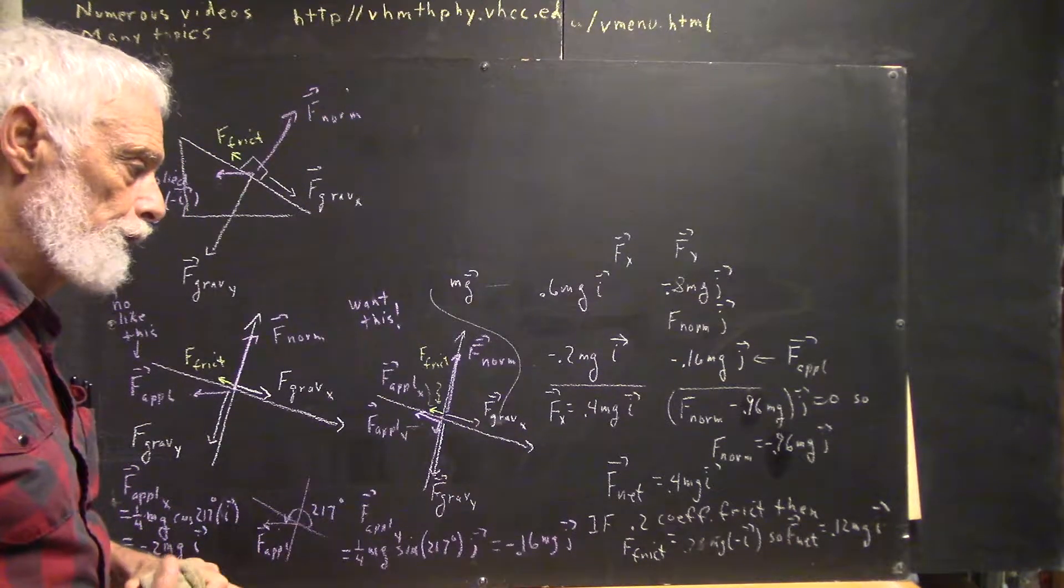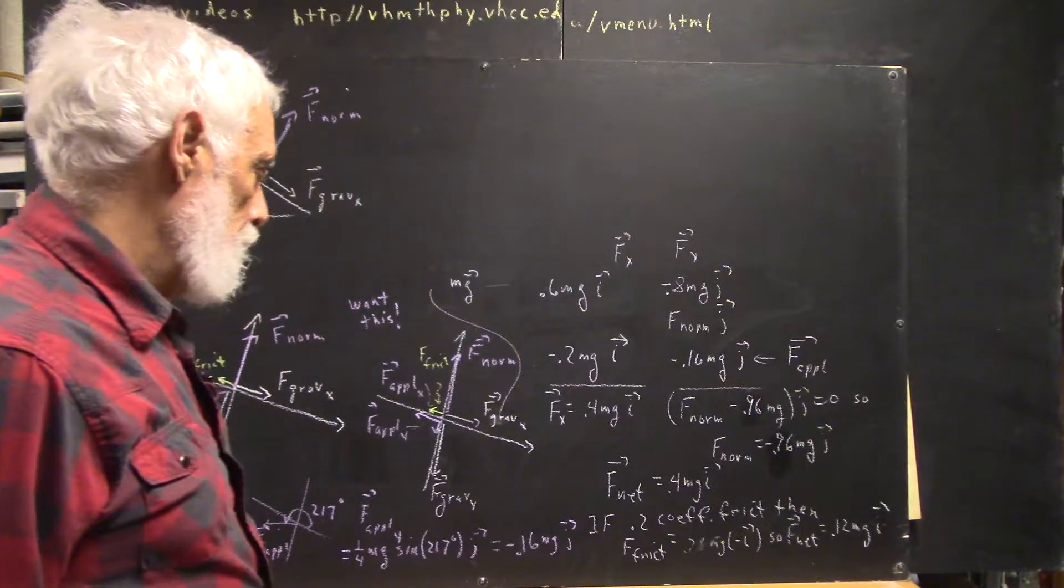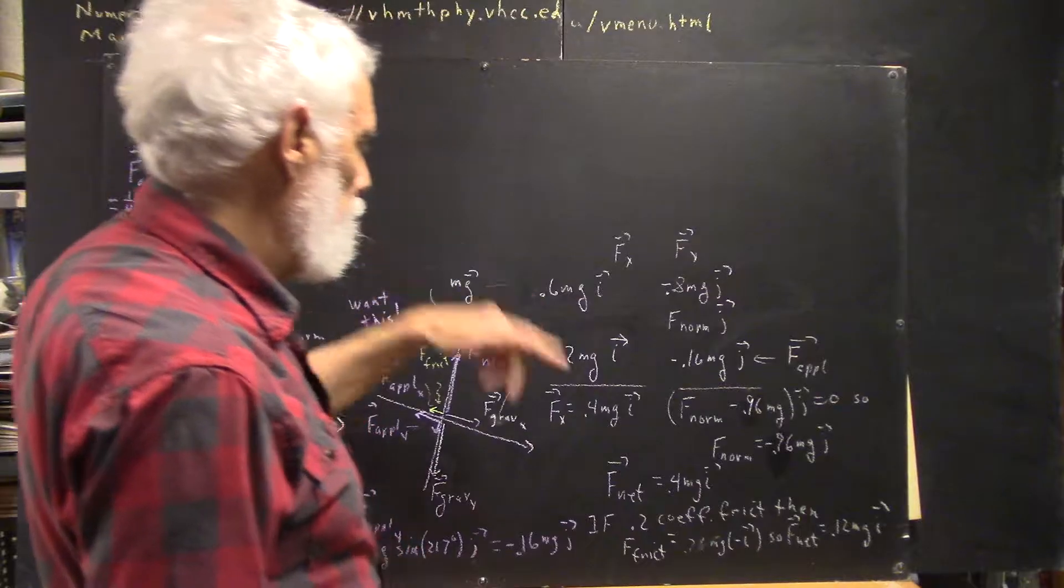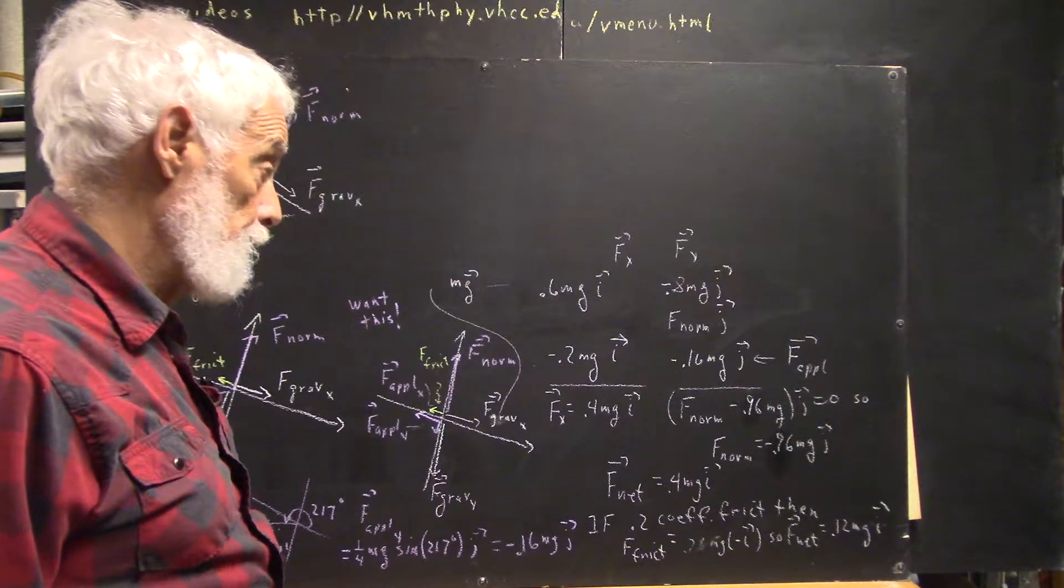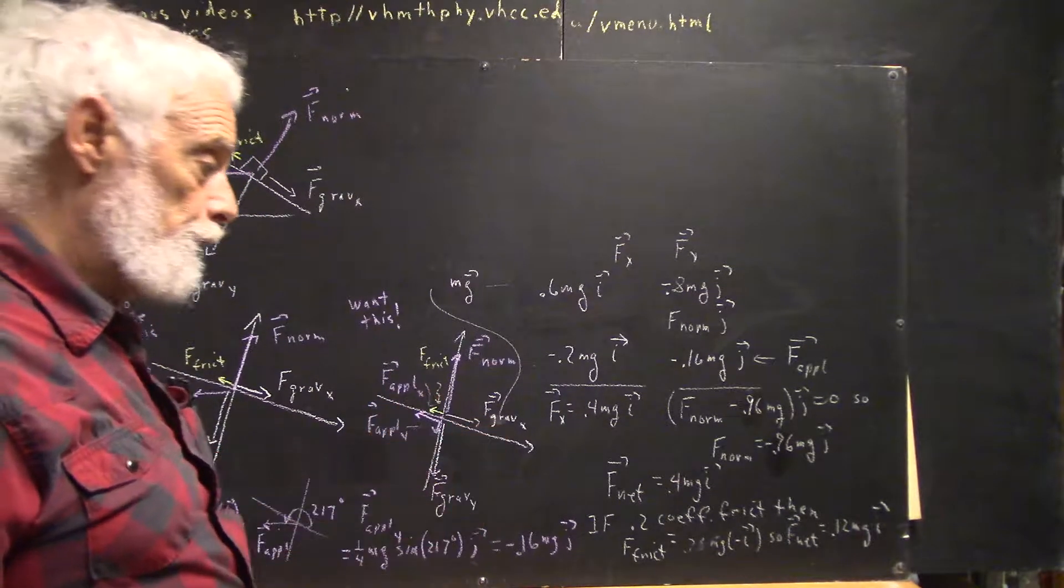Since there's no frictional force, we get net force of 0.4 mg times i, and acceleration divided by m, you get 0.4 g in the i direction, which would be about 4 meters per second squared in the i direction. Now, if you introduce friction, if we had the same coefficient of friction as before,